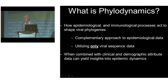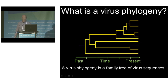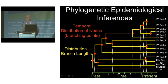So what is a virus phylogeny? It's essentially a family tree of a set of virus sequences. You can make the branch lengths of these trees proportional to time, and that allows you to make time-structured inferences about epidemic dynamics — using things like the distribution of where branching points are in time and the distribution of branch lengths to draw inferences about how far back in time epidemics began.